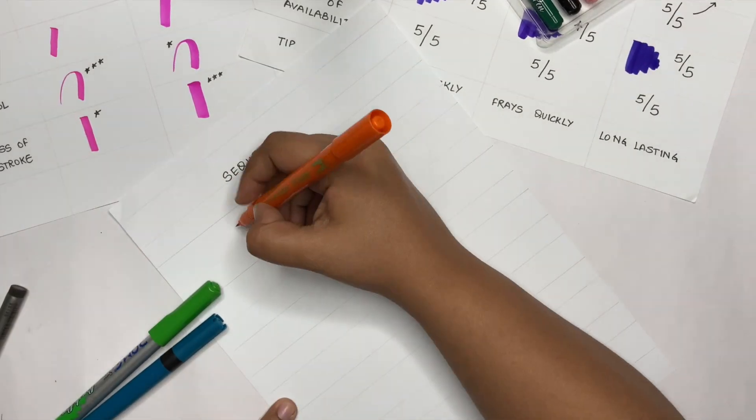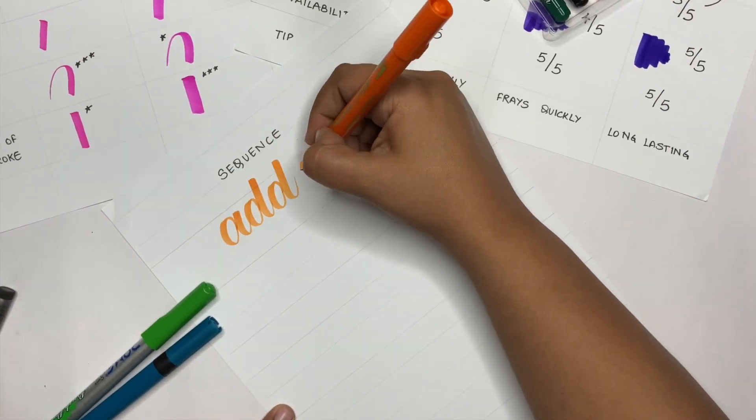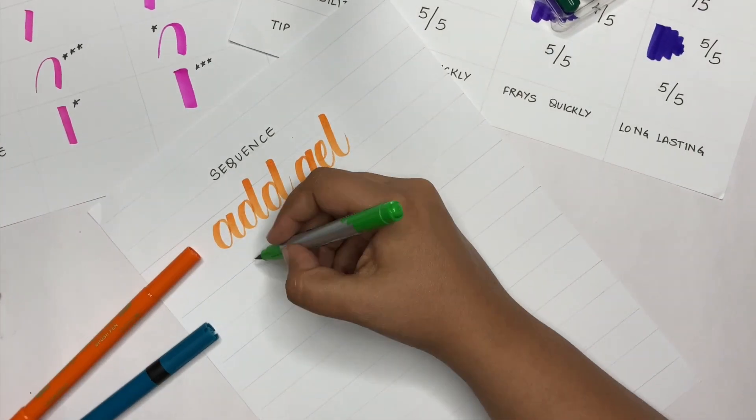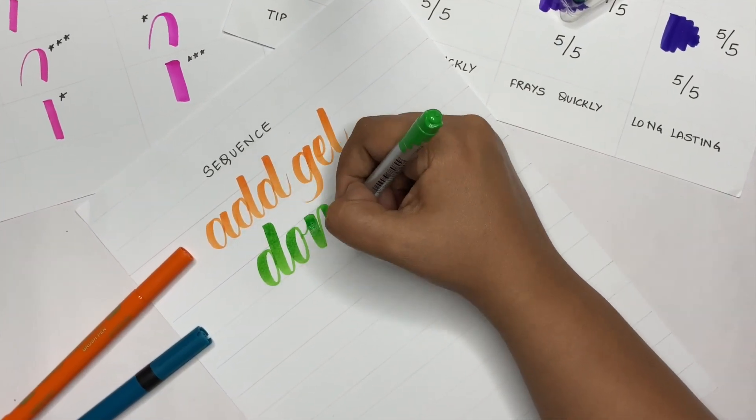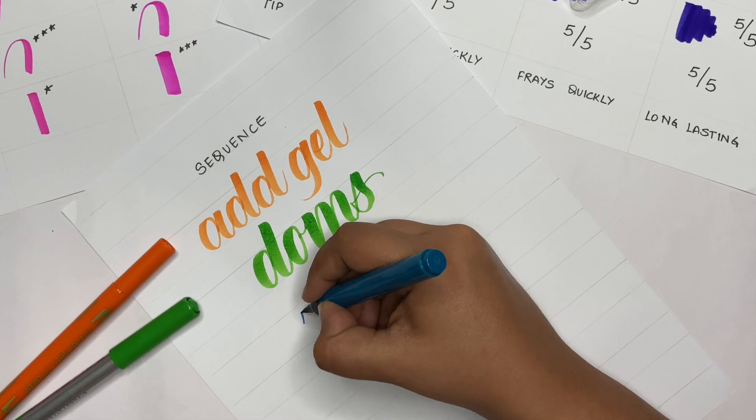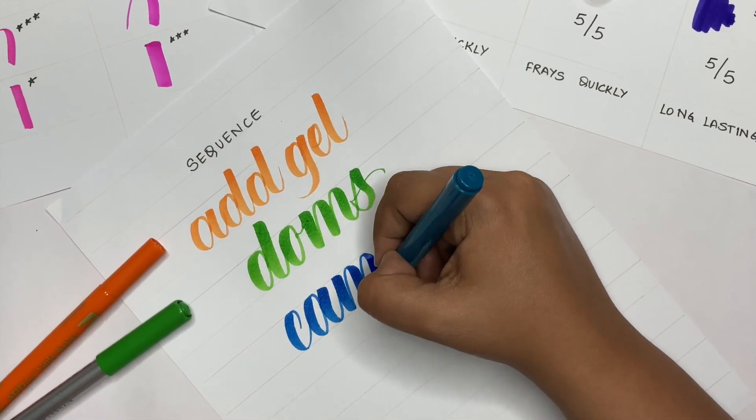In conclusion, so if you are planning to invest in brush pens, here is the order in which you should buy these cheap brush pens. First, ADD Gel Little Artist brush pens. Second, DOMS brush pens. Third, Camlin brush pens.